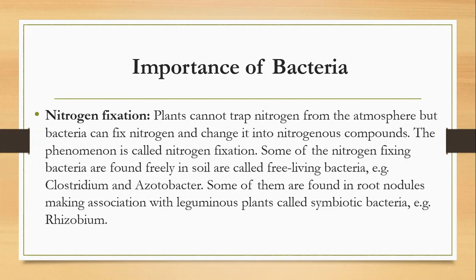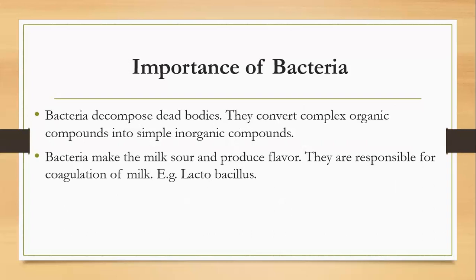Some nitrogen-fixing bacteria are found freely in soil — these are known as free-living bacteria. Examples include Clostridium and Azotobacter. Some are also found in root nodules, making a symbiotic association with leguminous plants — these are called symbiotic bacteria. An example is Rhizobium.